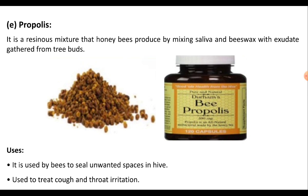The other product is propolis. It is a resinous mixture that honeybees produce by mixing saliva and beeswax with exudate gathered from tree buds. Propolis is used by bees to seal unwanted spaces in the hive, and it is used to treat cough and throat irritations.